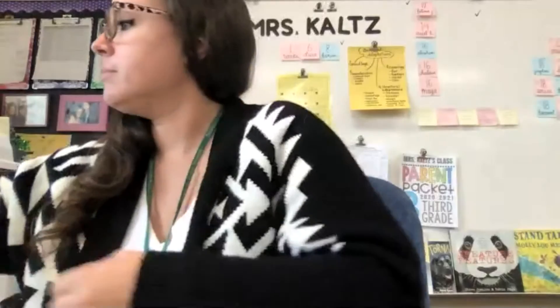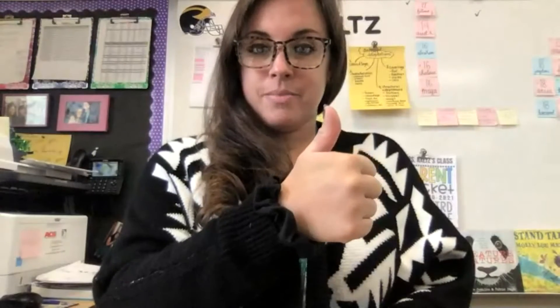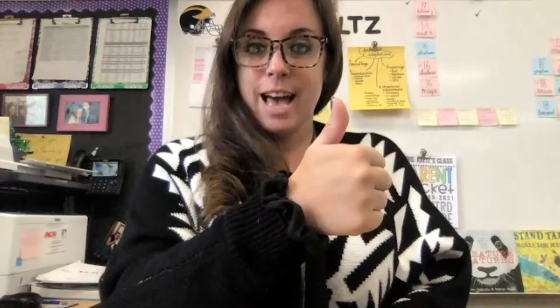Okay, we are going to start with some group counting. So we are going to count by seven, and we're going to stop at 49, and then we're going to count down. So seven, 14, 21, 28, 35, 42, 49, stop. 49, 42, 35, 28, 21, 14, seven, zero.